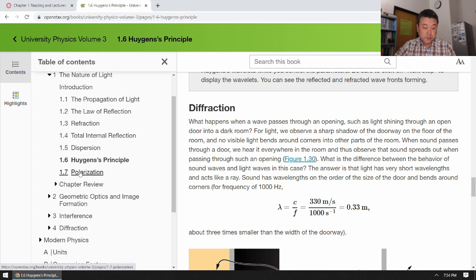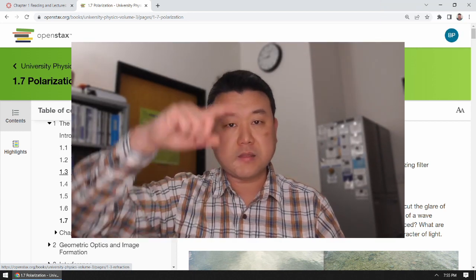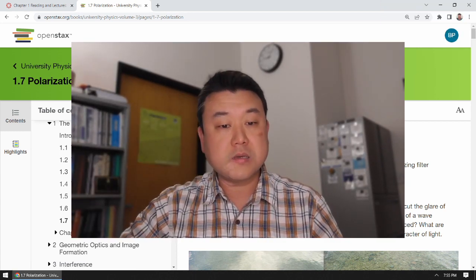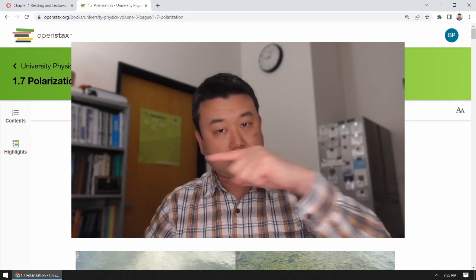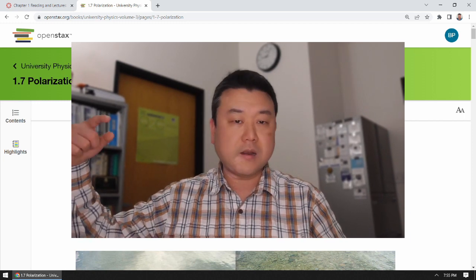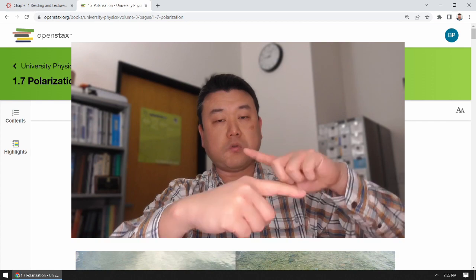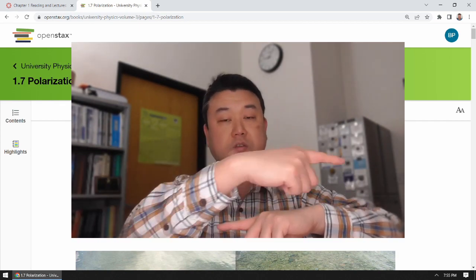The next section 1.7 also deals with the physical optics in the sense that you can't really talk about polarization without considering that light is a transverse electromagnetic wave. So transverse means the oscillating thing in light wave is perpendicular to the direction of propagation. So if light propagates from left to right, then the thing that's doing the oscillating is going to be oscillating perpendicular to that direction.